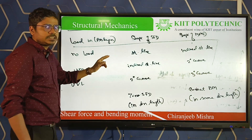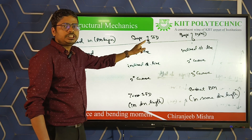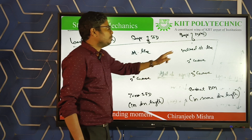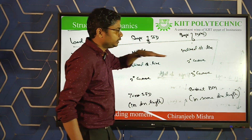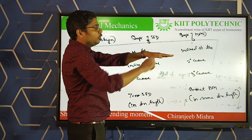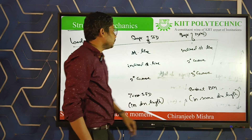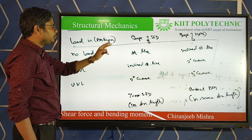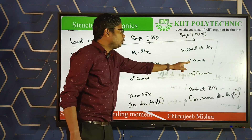For uniformly distributed load (UDL), the shape of the shear force diagram will be an inclined straight line, and the bending moment diagram will be a 2nd degree curve (parabola). For uniformly varying load, the shear force diagram will be a 2nd degree curve, and the bending moment diagram will be a 3rd degree curve.